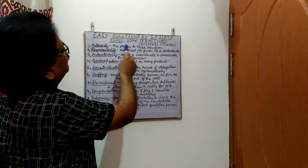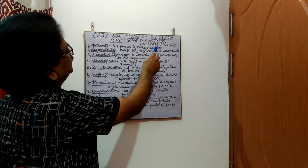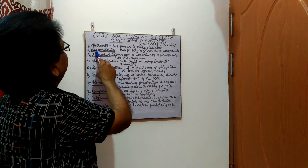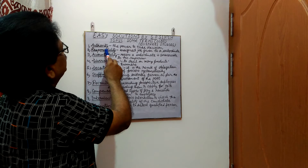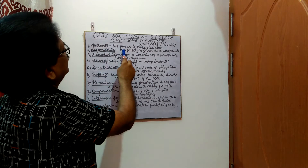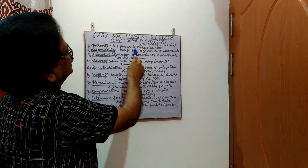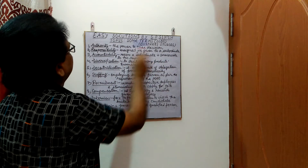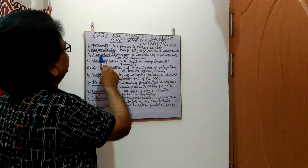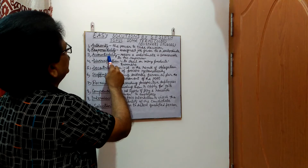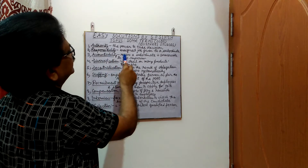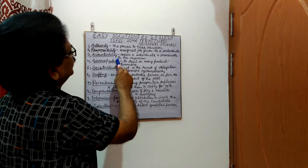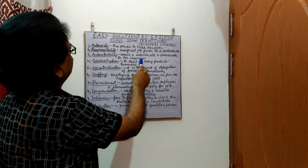Authority is the power to take decisions. Then Responsibility. Responsibility is the assigned job given to a subordinate. Accountability. Accountability means a subordinate is answerable to his superior.